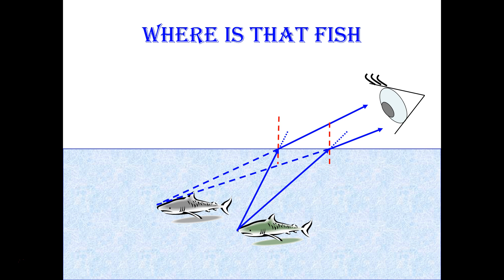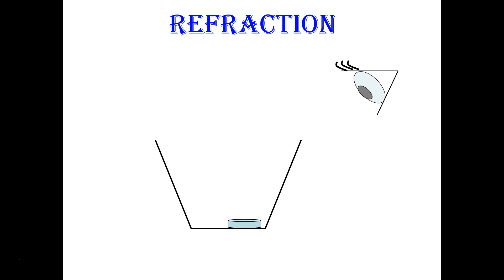So if you were to aim your spear or your hook at the fish that you see, you would be aiming too far to the side, and probably aiming a little bit too shallow. And so the image of the fish does not appear where the fish actually is. It's distorted to one side.